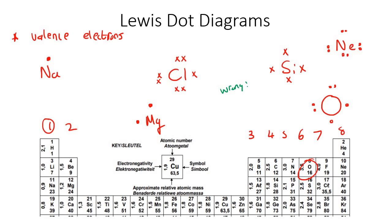Let's do calcium. Calcium is in group two, so that means it gets two electrons. And let's do boron — boron is in group three, so it gets three electrons: one, two, three.